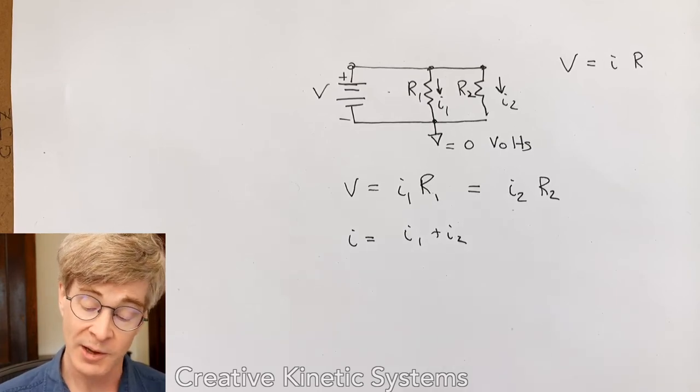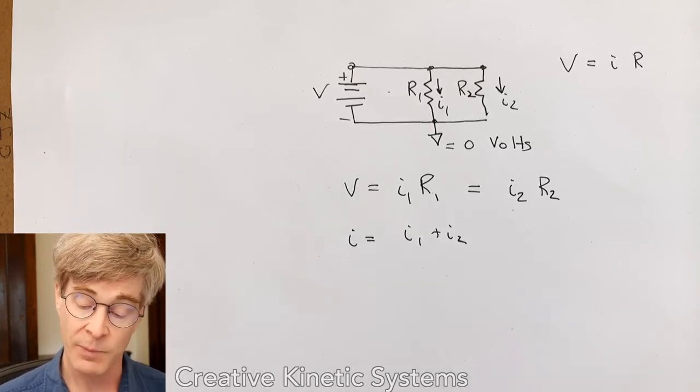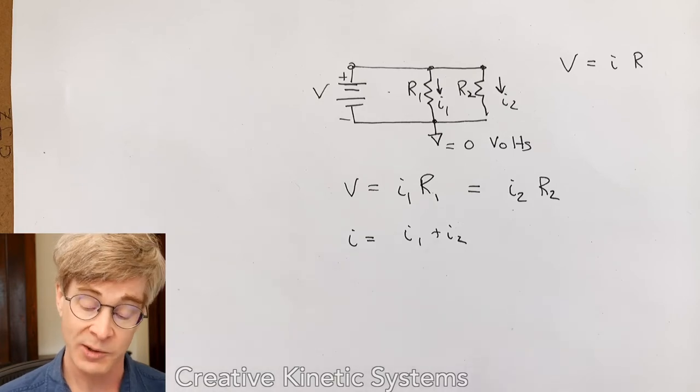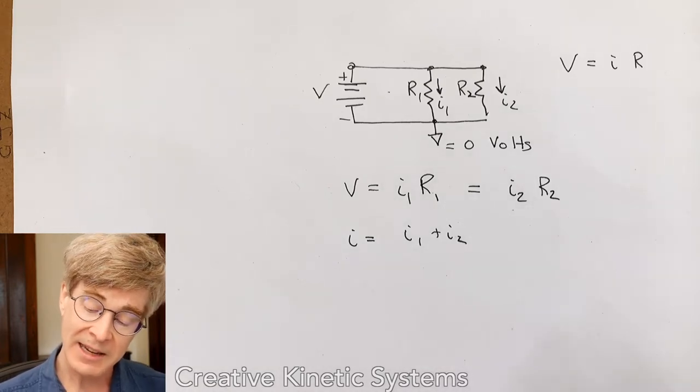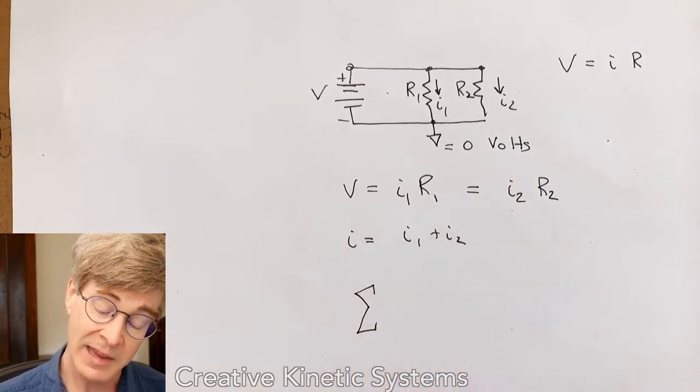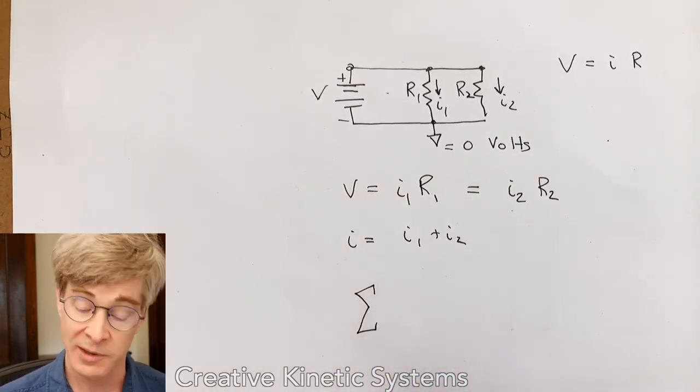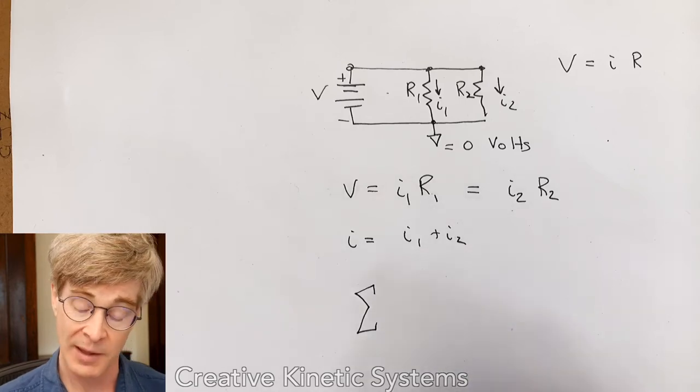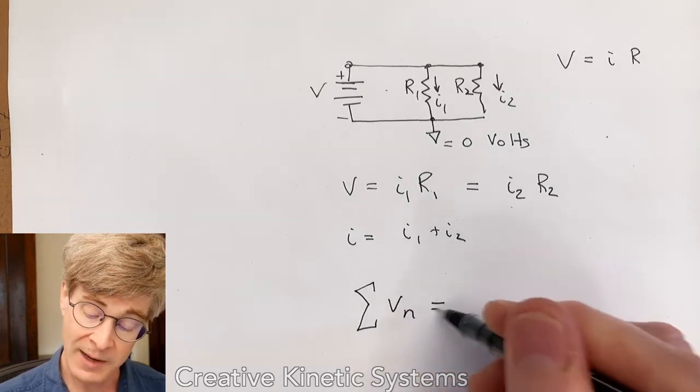Now, Kirchhoff's voltage law is a way of looking at the various relationships between parts of the circuit as loops. And it's a little hard to get at first, but I'll write it out to say that we think about traversing a loop in the circuit and we sum up all the potentials around that loop. What we're going to find is they always sum to zero.